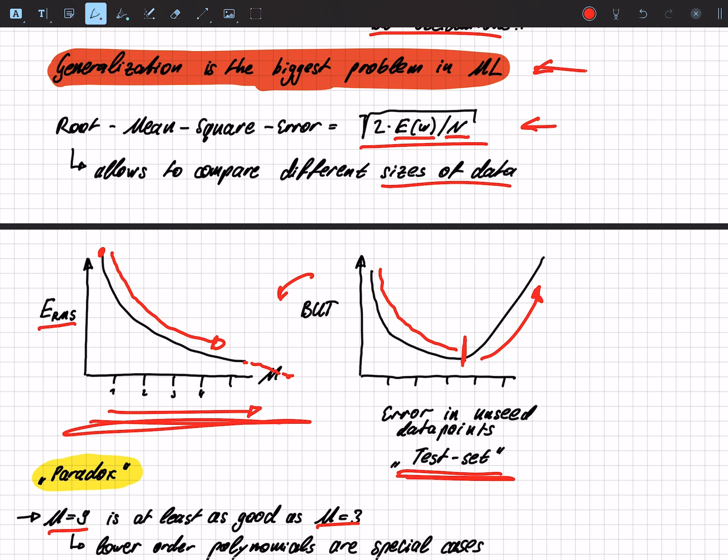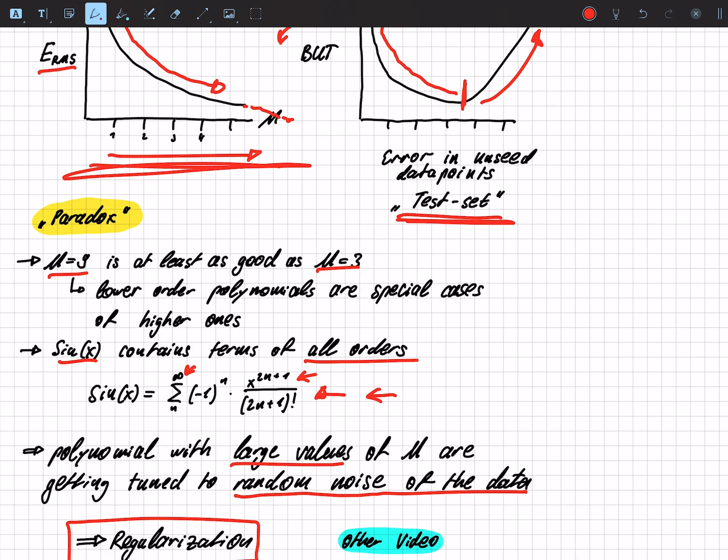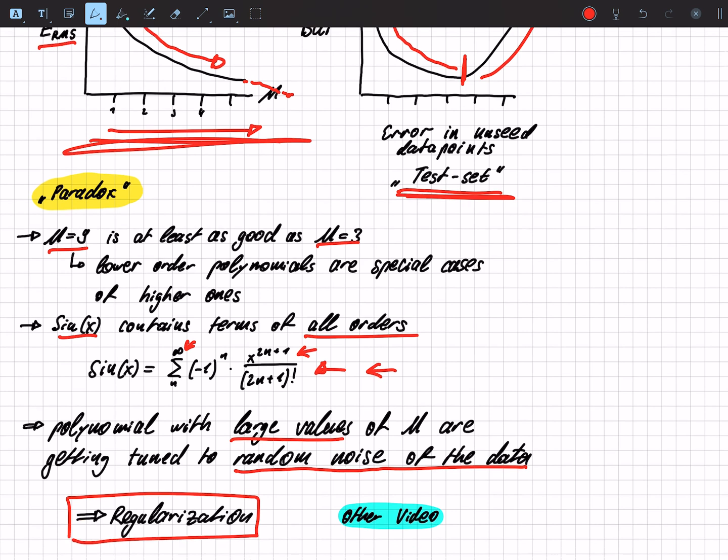And this is basically the paradox that why is that when degree 9 should be as good as degree 3 and the sine has also an infinite amount of polynomials. And this is because we are tuning to the random noise of data that we actually do not want. So this noise is present and we can't get rid of it, but we definitely should not learn it by heart.